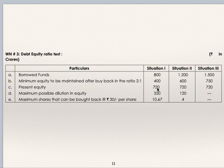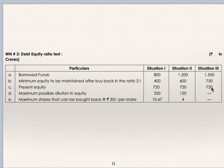Present equity, which is shareholders' funds (share capital plus free reserves), is 720 crores across all situations. Maximum possible dilution in equity: situation 1 — 720 minus 400 = 320; situation 2 — 720 minus 600 = 120. In situation 3, the minimum equity required (750) is more than the present shareholders' funds (720), so buyback is not possible. Shares to be bought back: situation 1 — 320 divided by 30 = 10.67 crores; situation 2 — 120 divided by 30 = 4 crores; situation 3 — company cannot buy back shares.